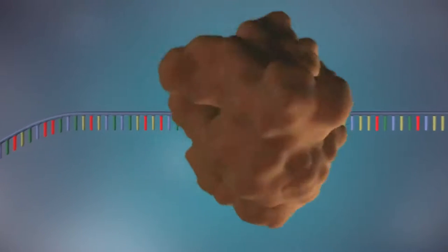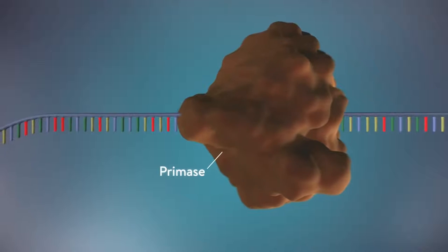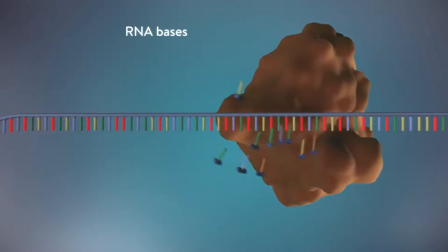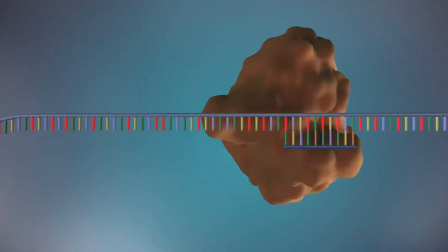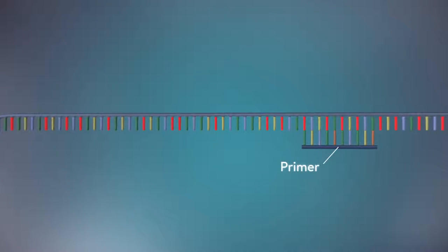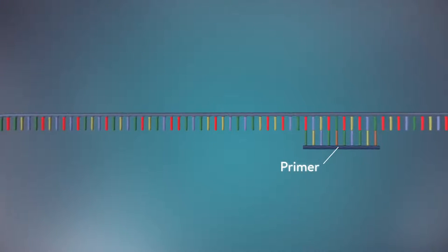An enzyme called primase starts the process. This enzyme makes a small piece of RNA called a primer. This marks the starting point for the construction of the new strand of DNA.